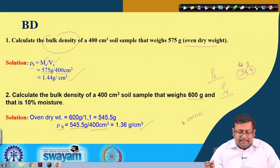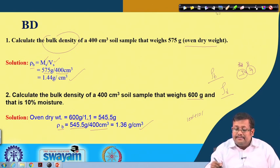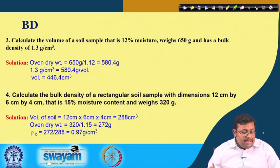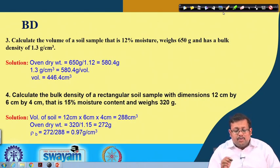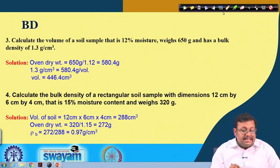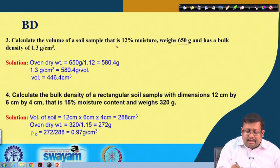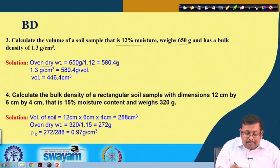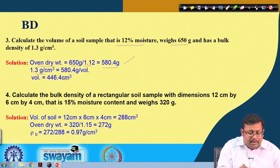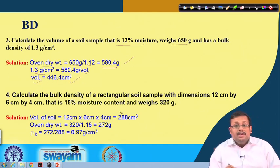The third problem: calculate the volume of a soil sample that is 12 percent moisture, weighs 650 grams, and has a bulk density of 1.3 grams per cc. The moist weight is 650 grams with 12 percent moisture, so oven-dry weight equals 650 over 1.12, giving 580.4 grams. Since bulk density equals mass of oven-dry soil over volume, volume equals 580.4 over 1.3, giving 446.4 cubic centimeters.